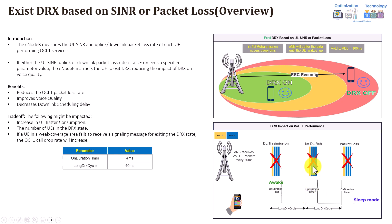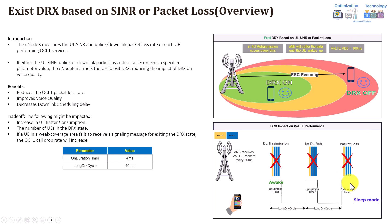If that packet fails again, we are now at approximately 80 ms. The eNodeB needs to retransmit the same packet, but again must wait for the next long DRX cycle — another 40 ms. Since the VoLTE packet delay budget is 100 ms, if retransmission happens at around 110 ms, it crosses the 100 ms threshold, the packet is lost and discarded.